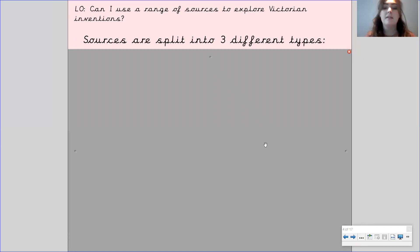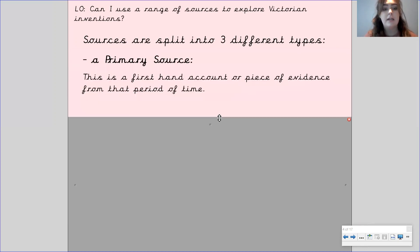Sources are then split into three different types. So the first type we have is a primary source. My turn, your turn: primary source, primary source. Now this is a first-hand account or piece of evidence from the period of that time. So it could be something like a photograph, that's a primary source. It could be a diary entry, that's a primary source. So it's something that is from that period of time.